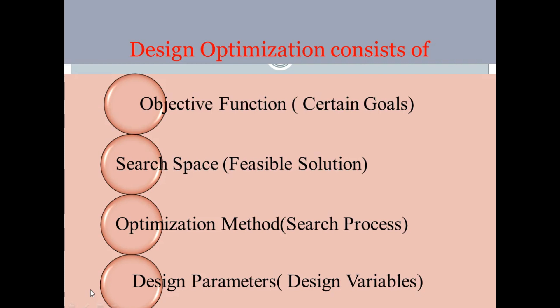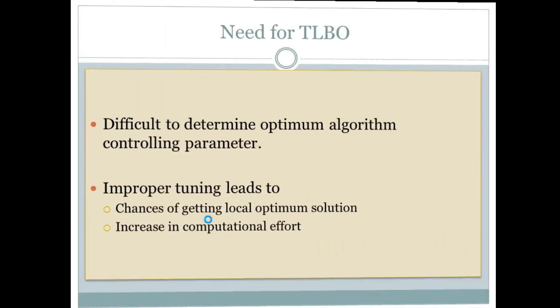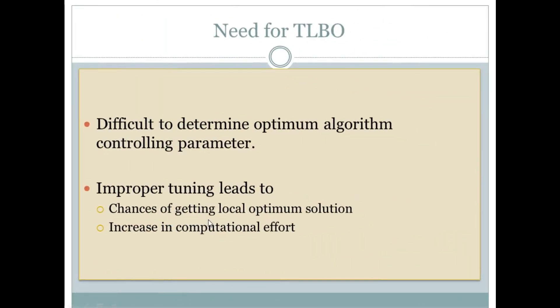We are aware about the feasible solutions and we are looking for the optimal solution. We need some optimization methods. Traditional methods are available but they have very high time complexity — the running time is too high, which is not feasible. So here we use this nature-based teaching learning algorithm, which is based on a search process that gives us the optimal solution. We have design parameters — design variables — which have an impact on finding the optimal solution.